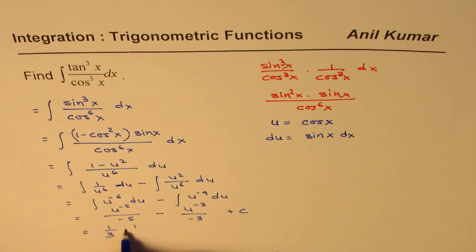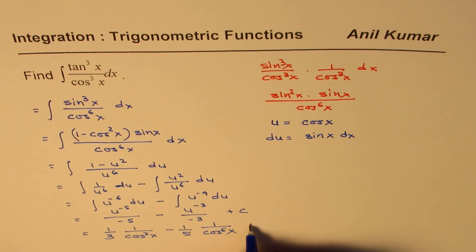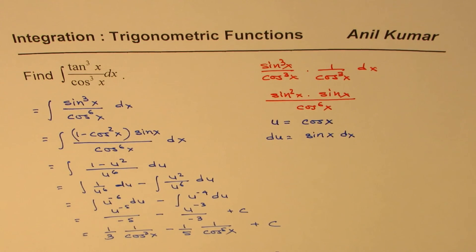so we can write this as 1 over cos cube x, and this is minus 1 over 5, and 1 over cos to the power of 5x, plus c. So that becomes the integral of the given question. I hope that helps. Thank you, and all the best.